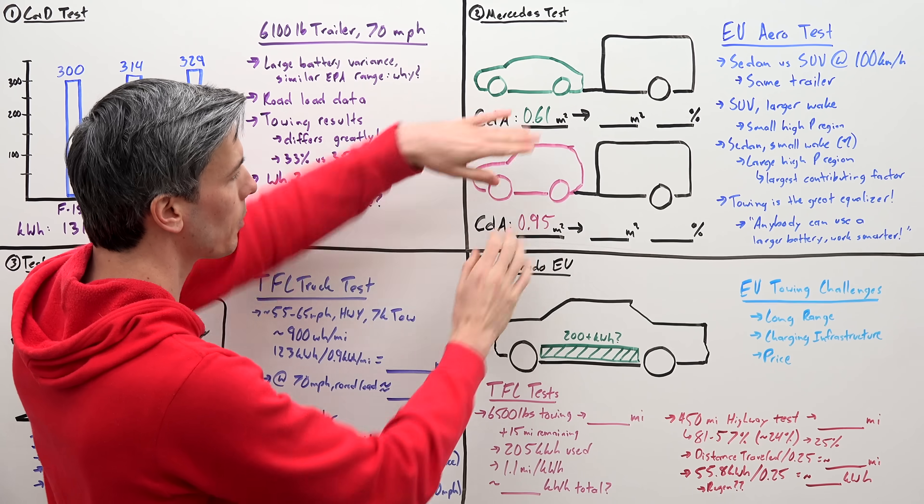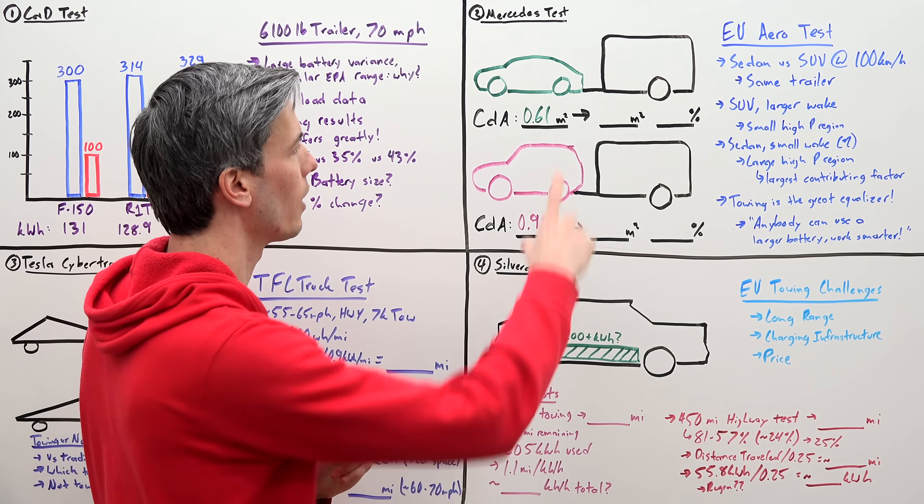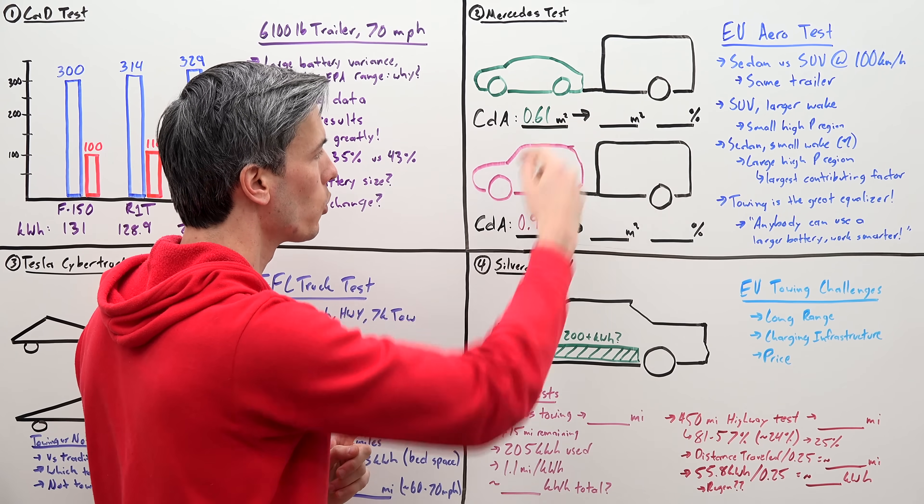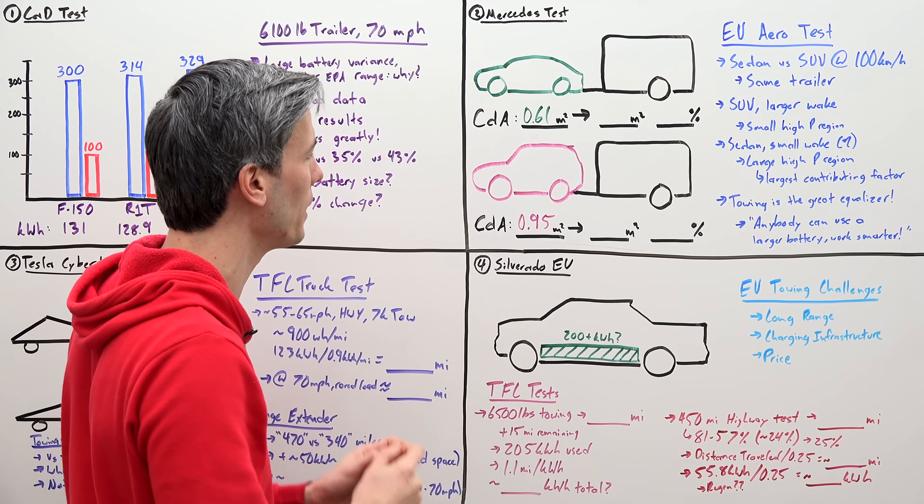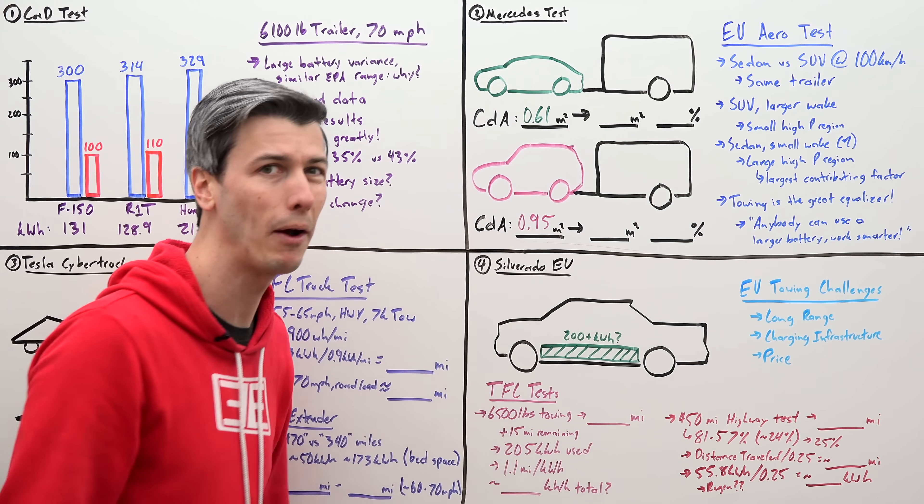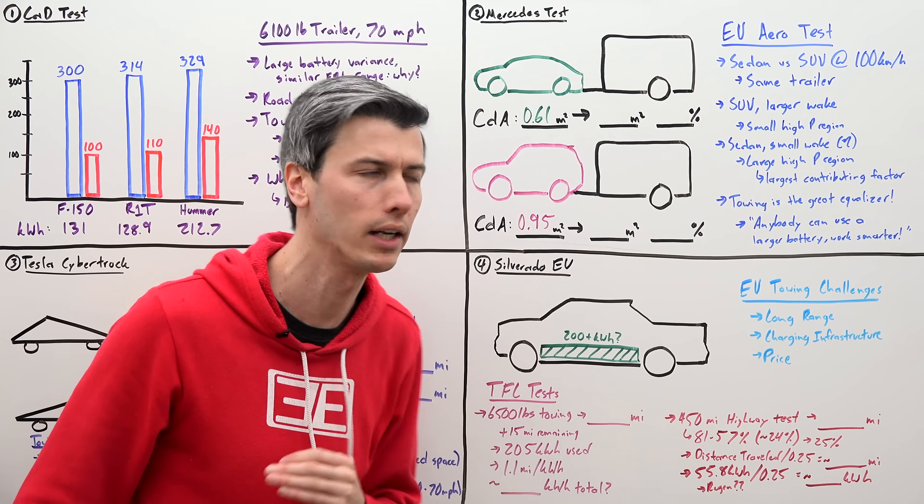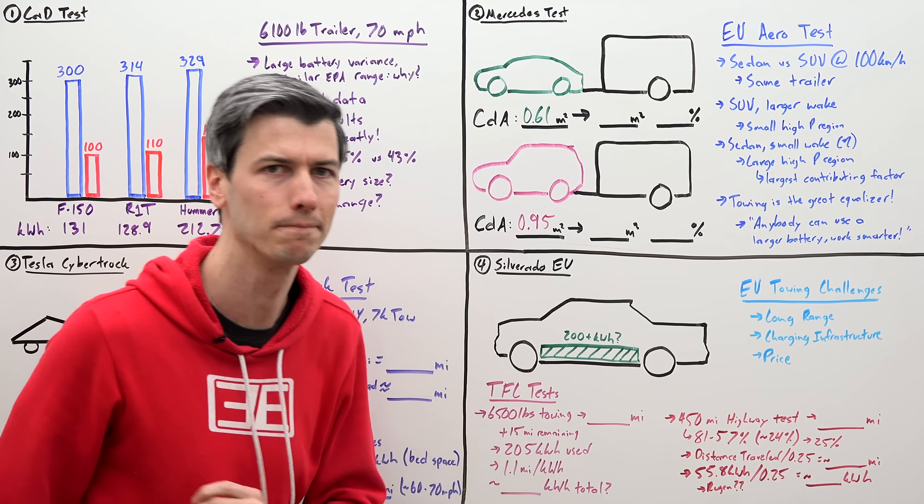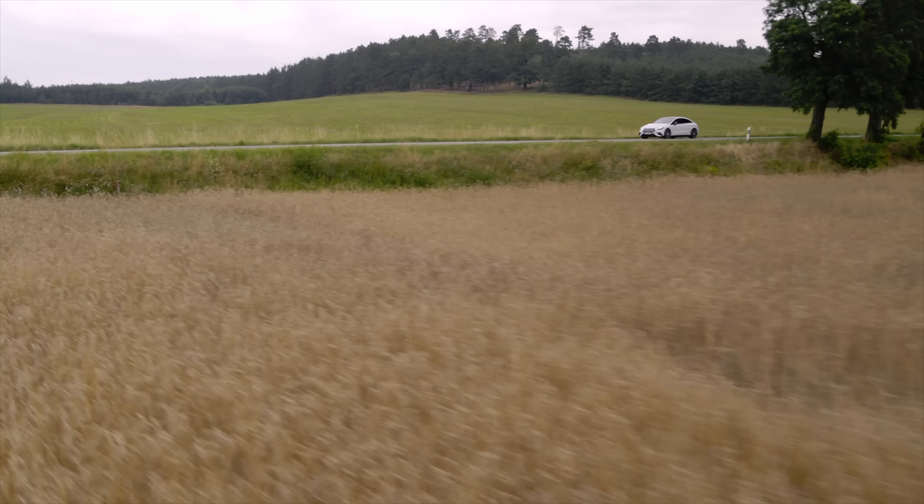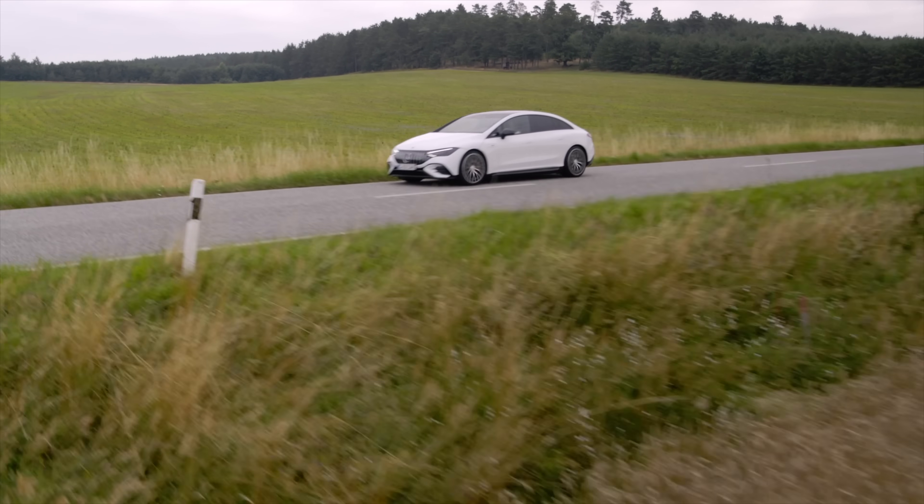Now, you don't really need to know what these numbers exactly mean. All you need to know is that the difference between these two is that if both of these vehicles are traveling down the highway at the same speed, the SUV is going to have about 50% more aerodynamic drag versus the sedan because its CDA is about 50% higher.